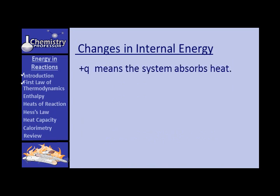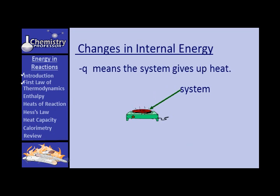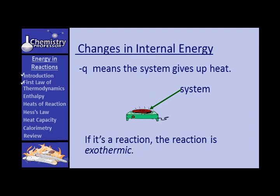If Q is positive, the system has absorbed heat — the reaction is endothermic. For example, heating a system on a hot plate means that system is absorbing heat and is endothermic. If Q is negative, the system is giving up heat, so the reaction is exothermic — like a very hot hot plate radiating heat to its surroundings. Plus W means the surroundings do work on the system, so the system gains energy. Minus W means the system does work on the surroundings.